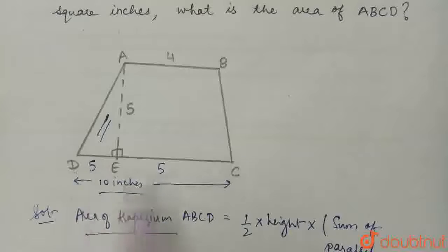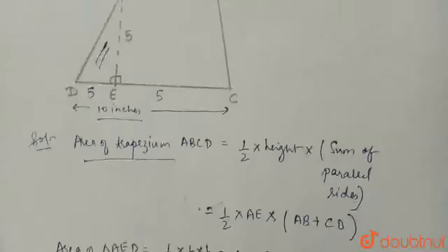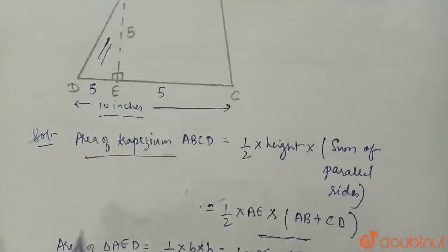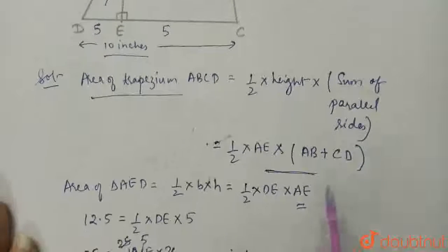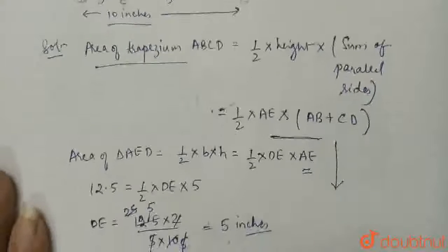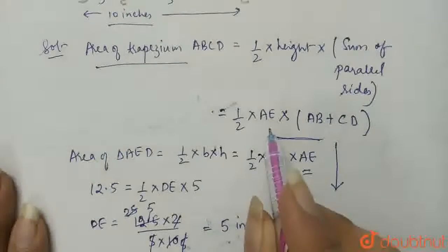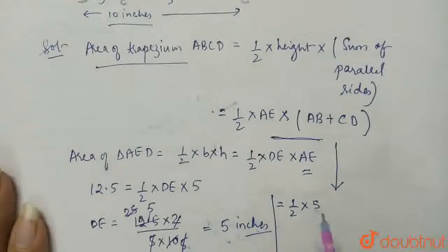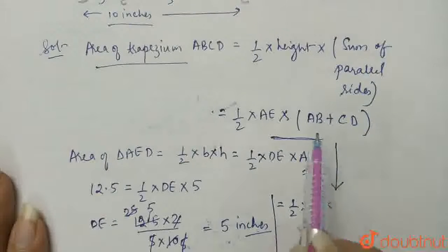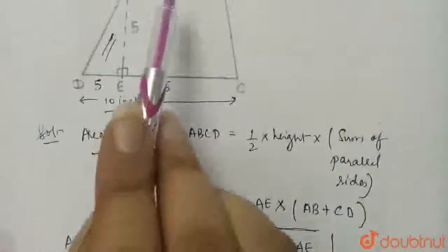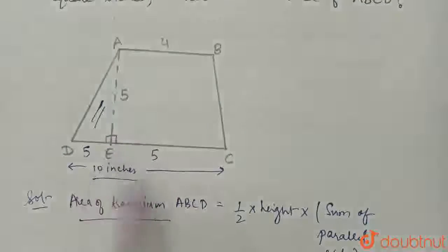Now we have calculated the value of CD. Putting this in the formula, we can find the area of the trapezium. The area equals half times 5 (the value of AE) times (AB plus CD). AB is 4 and CD is 10.